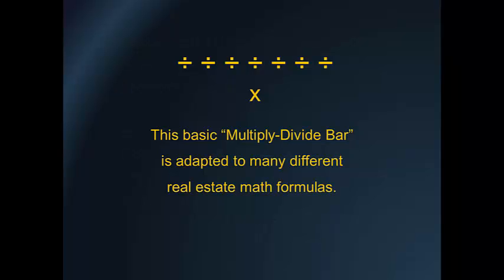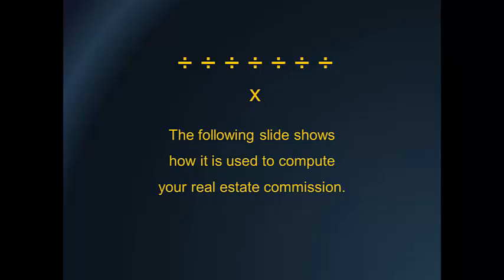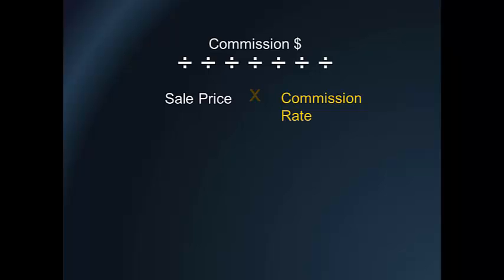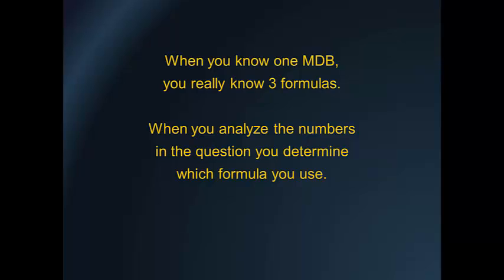This basic multiply-divide bar is adapted to many different real estate math formulas. The following slide shows how it is used to compute your real estate commission: sale price times commission rate equals commission dollars; commission dollars divided by sale price equals commission rate; commission dollars divided by commission rate equals sale price. When you know one multiply-divide bar, you really know three formulas.